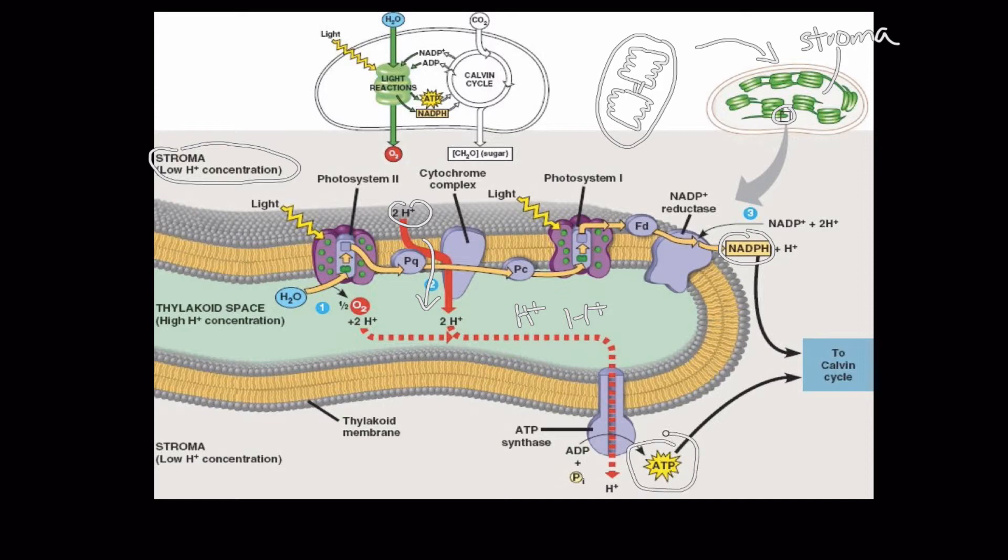Now the ATP and the NADPH that's been produced is going to go to the Calvin cycle, where carbon is going to be fixed, and we'll talk about that in a future videocast.